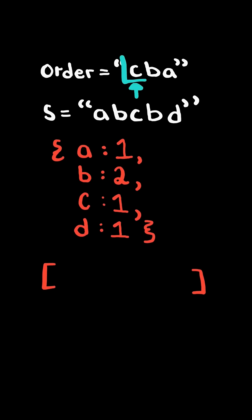We iterate through order. If the character exists in the map, we append to the array the character times its count. Then we delete the entry from the map, and we continue.